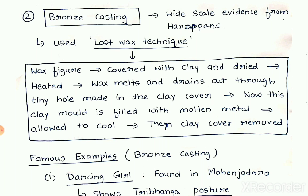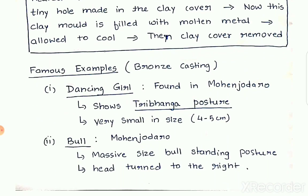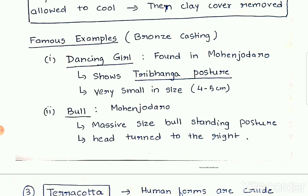Even today, these kinds of techniques are still in use. The famous examples of bronze casting are a dancing girl and a bull, both found in Mohenjo-daro. The dancing girl shows the tribhanga posture and is very small in size — nearly 4 to 5 cm — which shows the precise technique and artistic qualities of Indus Valley people. The bronze bull was massive in size, made in a standing posture, with the head of the bull slightly turned to the right side.